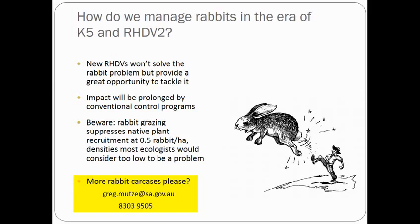One or two questions? When you're saying that RHDV2 is coming to South Australia in probably 12 months, has there been any suggestion to try and introduce it more quickly? At the moment this is classified as an exotic disease, and we can't legally spread it anywhere.